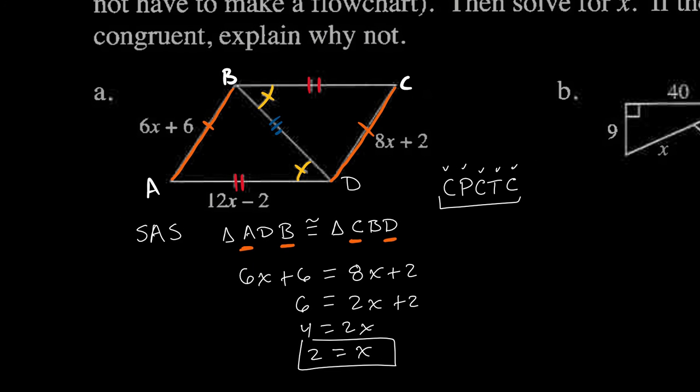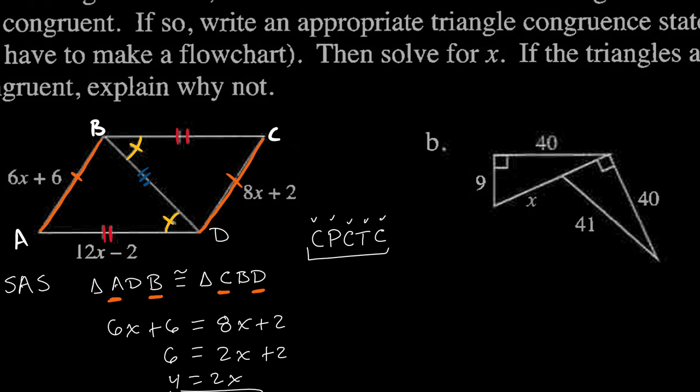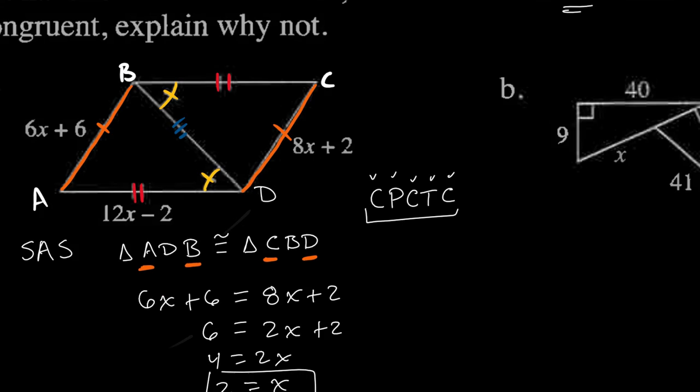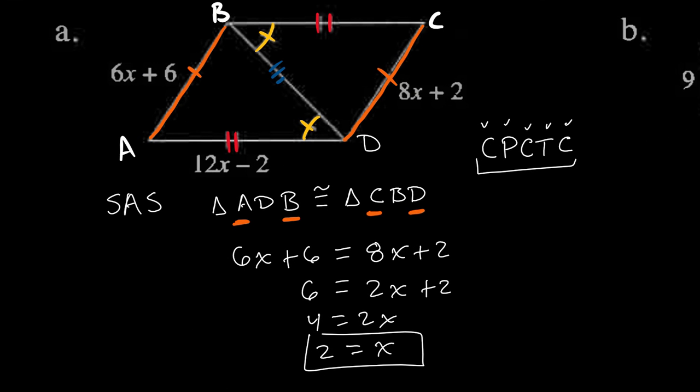The question asked to solve for x. If x is 2, then 6x + 6 equals 12 + 6, which is 18 units long. And 8x + 2 equals 16 + 2, also 18 units long. So when x is 2, both sides are equal. The triangles were congruent by side-angle-side, and x = 2. Let's go to part B.